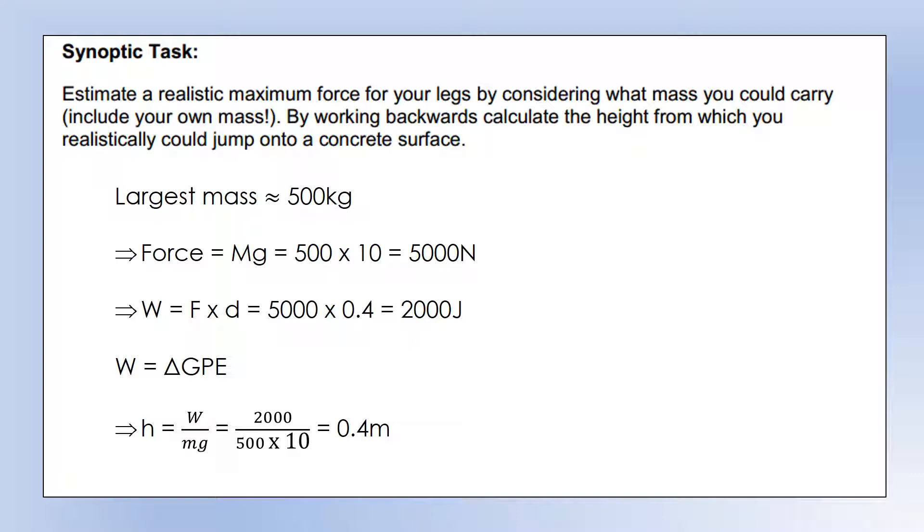So I looked up the fattest people on earth, and they were about 600 kilograms, and they can't walk. So I reckon the largest mass that can walk is probably about 500, which means you're supporting a weight force of 5,000 newtons.